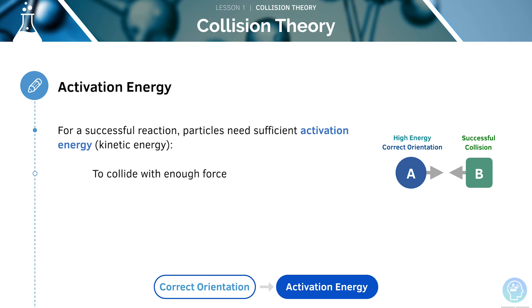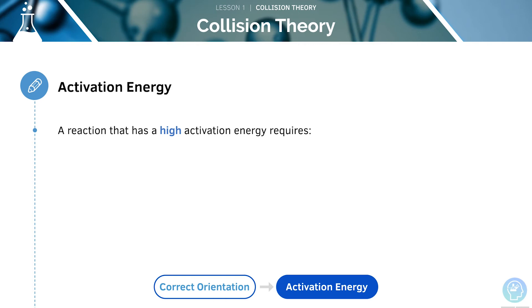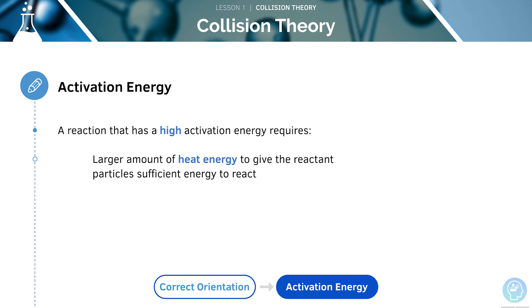This is to ensure that they collide with enough force. This sufficient amount of energy is known as activation energy and is required to break the bonds between the reactants. A reaction with a low activation energy will happen more easily than a reaction with a high activation energy. A reaction that has a high activation energy requires a larger amount of heat energy to begin the reaction, needed to give the reactant particles sufficient energy to react.